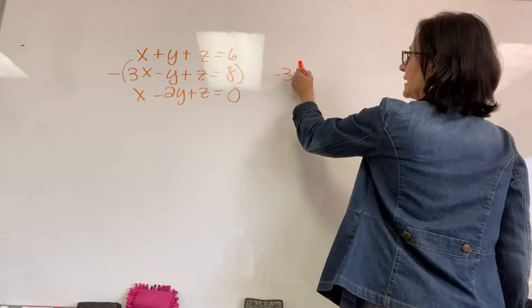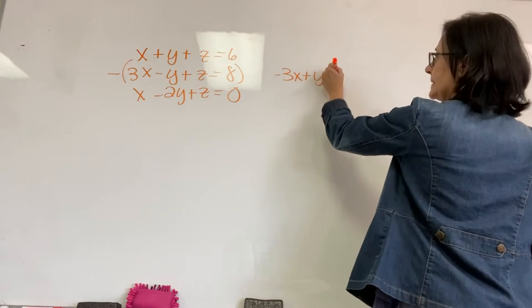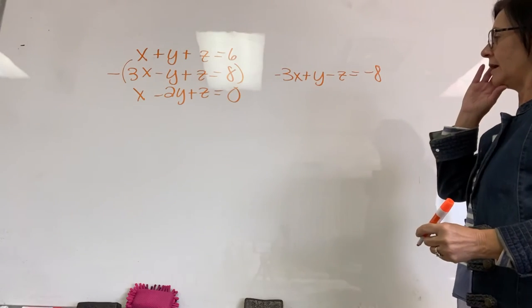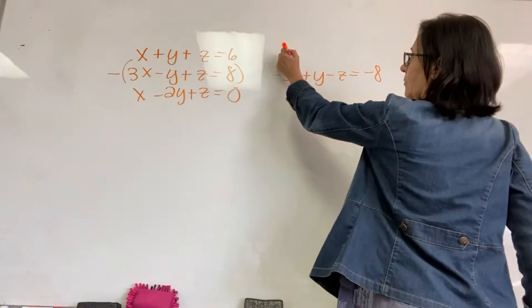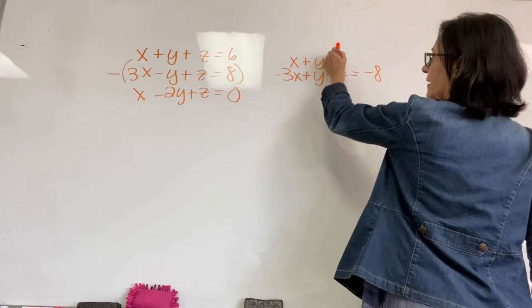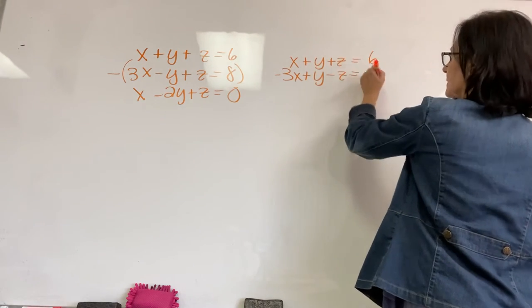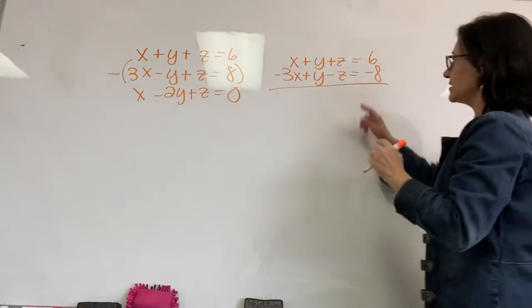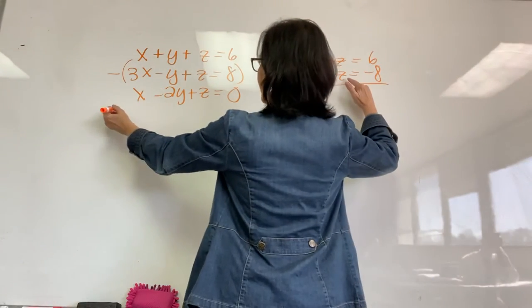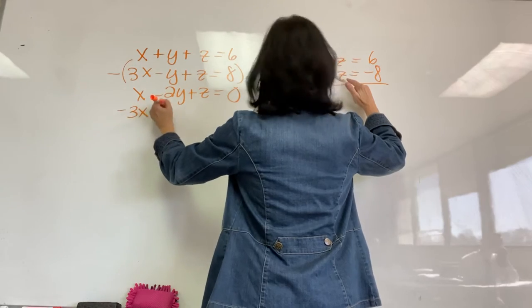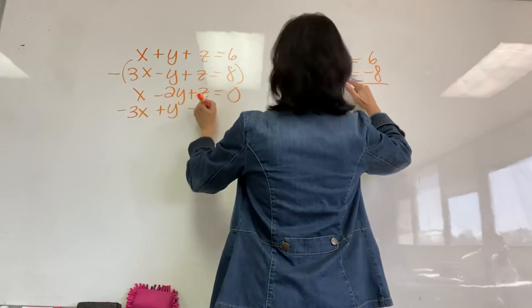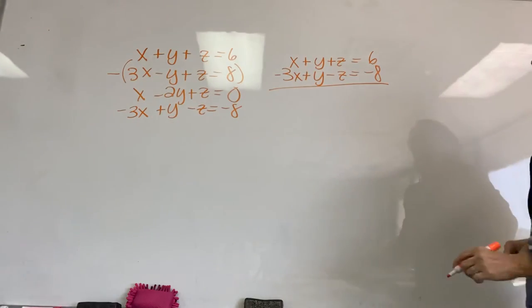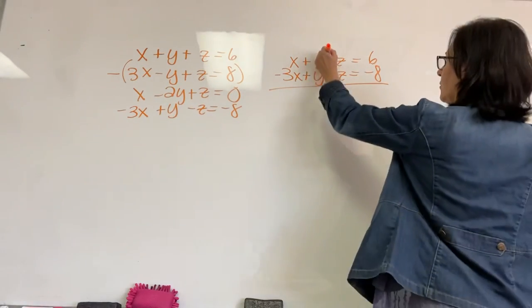So, we have negative 3X plus Y minus Z is negative 8. Make sure I change all of the signs. Then, we'll write the first equation above it. Our Z's will eliminate. Actually, I'm going to go ahead and write this one down here before I start crossing through. So, I can then take those second two. All right. So, my Z's eliminate.